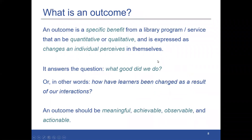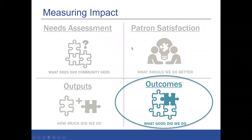Project Outcome is based on outcome measurement — we're looking at the specific benefits that library programs or services offer to users. We measure those in both quantitative and qualitative ways, really trying to get at the question: what good did we do? This is not the only type of assessment libraries do, but it's an important piece that often gets left out. Adding that outcome data to the bigger impact story can help drive decision-making and strategic planning.